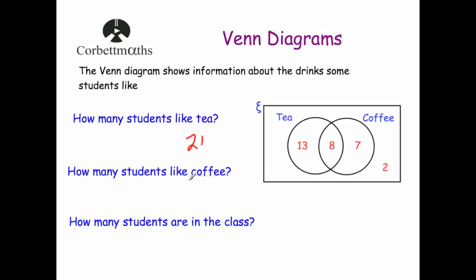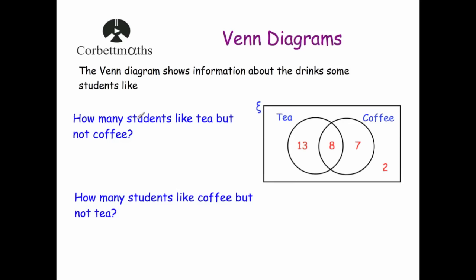How many people like coffee? Looking at the coffee circle, we've got 8 and 7, so 15 people like coffee altogether. How many students are in the class? Adding all numbers: 13 + 8 + 7 + 2 = 30 students. How many like tea but not coffee? That's the 13 in the tea circle only. How many like coffee but not tea? That's the 7 — 7 people like coffee but not tea.